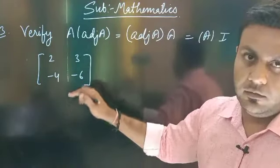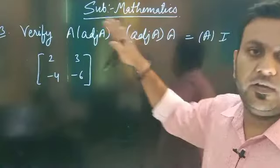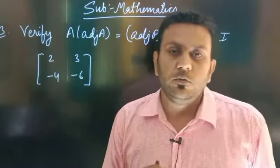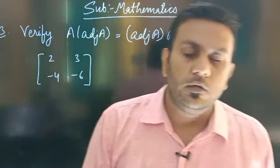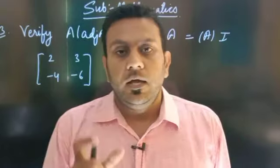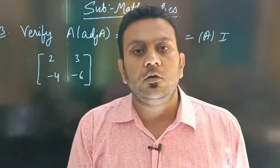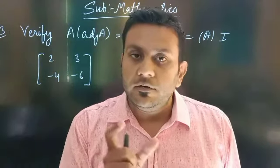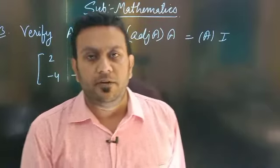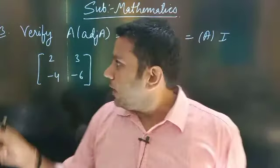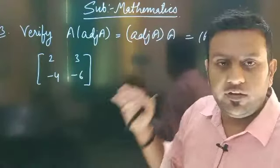Verify. This is theorem number 1. Verify that A into adjoint A is always equal to adjoint A into A, which is equal to determinant A into unit matrix. So you have to verify this relationship.